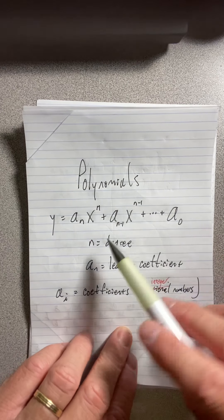The highest one is called the degree, and the coefficient to the variable with the highest power is called the leading coefficient. So anyway, polynomials look like this.